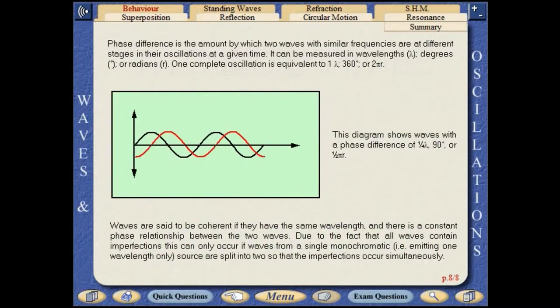The phase difference is the amount by which two waves with similar frequencies are at different stages in their oscillations at a given time. It can be measured in wavelengths, degrees, or radians. One complete oscillation is equivalent to one wavelength, 360 degrees, or two pi radians.